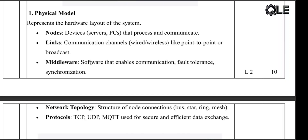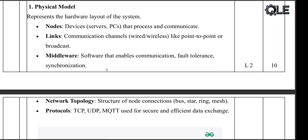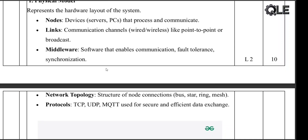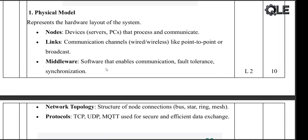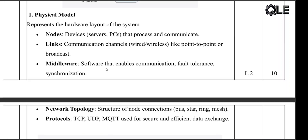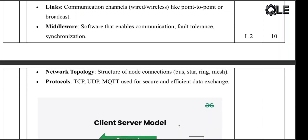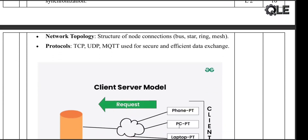Middleware is the software that helps with communication, fault tolerance, and syncing everything together. Network topology means the structure of the connections, like bus, star, ring, or mesh shapes. Protocols are the rules for communication, like TCP, UDP, or MQTT. Think of the physical model like a map of the roads and buildings in a city — it shows where everything is and how they are connected.